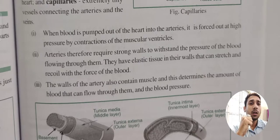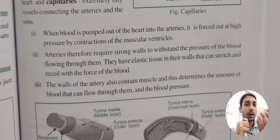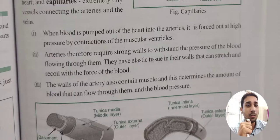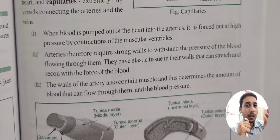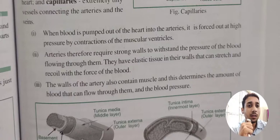When blood is pumped out of the heart into the arteries, it is forced out at high pressure by contraction of the muscular ventricles. Arteries require strong walls to withstand this pressure, which is why they are thicker than veins. They have elastic tissue in their walls and can stretch and recoil. The muscular walls of arteries also determine the amount of blood flow and blood pressure.